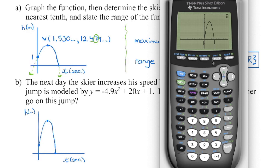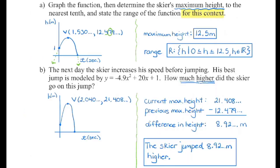Now again, second function trace — we have a maximum, so we choose number 4. We can see where the cursor is; we go to the left, then move it over to the right, and press enter to guess. There are the coordinates of our new vertex. Height is on the y-axis, so we want the y-coordinate of the vertex — this is how high the skier is currently jumping. The previous jump was 12.5 meters. Taking the difference between them tells us how much higher he jumped on the second jump. It doesn't tell us what to round to, so leave that as an exact answer — but make sure you include the appropriate units.